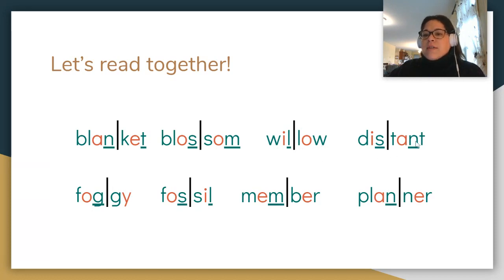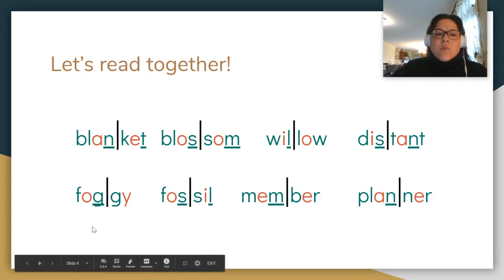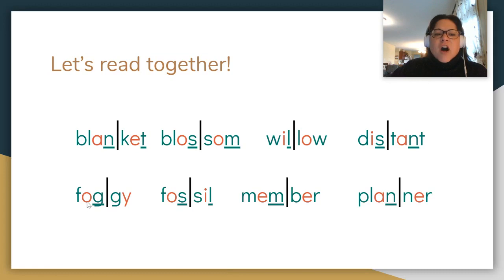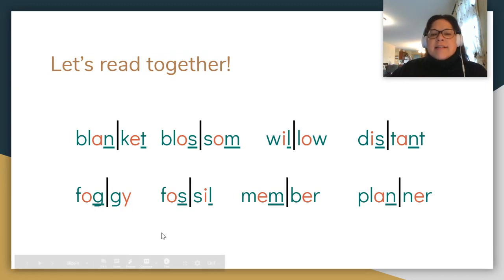Next one. Two syllables. This one's a closed syllable and this one's a closed syllable: 'dis' — 'tant' — 'distant.' Excellent. Next one: closed syllable, no closed syllable — 'fog' — 'gy' — 'foggy.' Excellent.